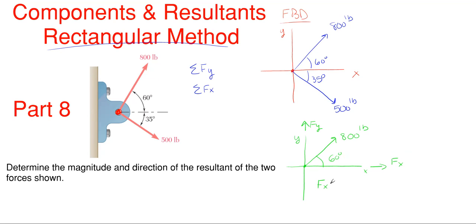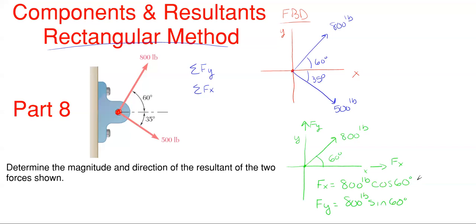My fx is going to be 800 pounds times cosine of 60 degrees. Since the angle is off of the x-axis, cosine will be associated with the x because the angle is adjacent to it. The fy will be 800 times sine of 60 degrees because the y is opposite that 60-degree angle — it is not touching it, so we use sine because sine is for the opposite side. So 800 cosine of 60 gives me exactly 400 pounds acting to the right, and 800 sine of 60 gives me 692.8 pounds in the upward direction.